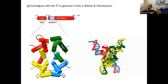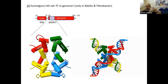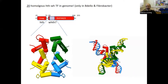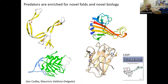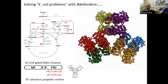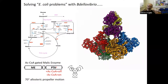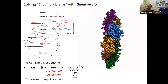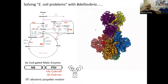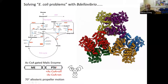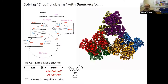It's a mystery what the specificity of all 20 is. Are they involved in looping and binding really condensed regions of DNA? Predators are enriched for novel folds and novel biology, and we take this seriously and submit our structures to CASP. We can also solve E. coli proteins in predators — here's a metabolic hub enzyme: when you take its allosteric regulator out, the enzyme subunits rotate like propellers. It's really very cool. So predators are a good tool not just to study predatory biology, but to study all processes really.